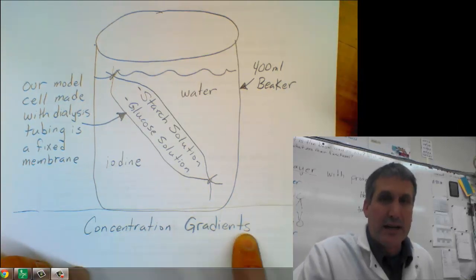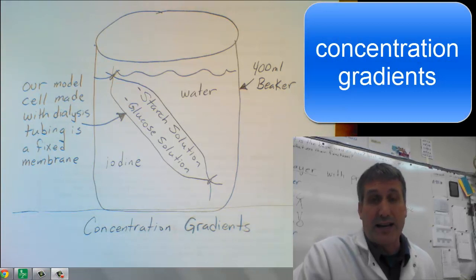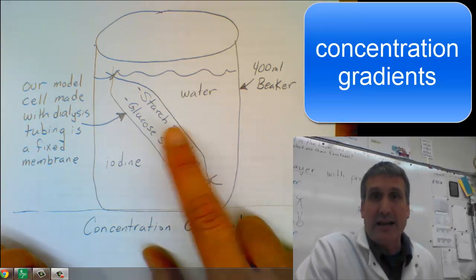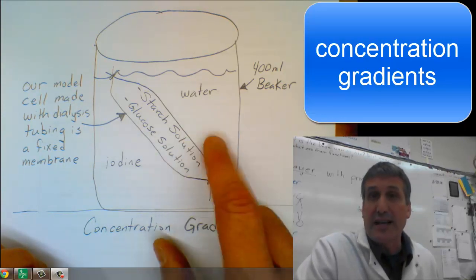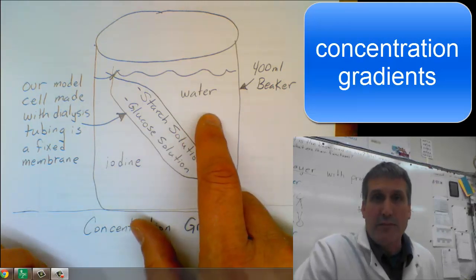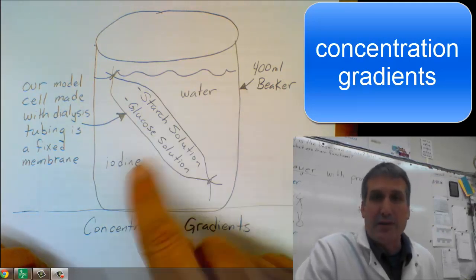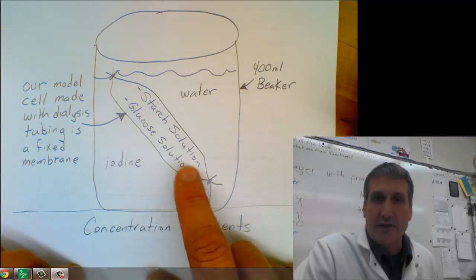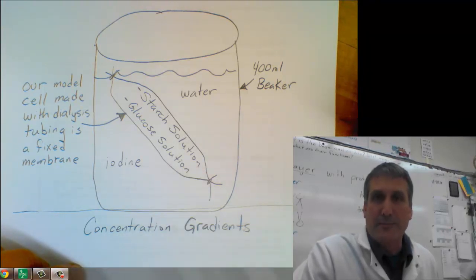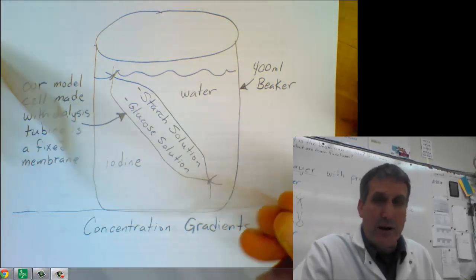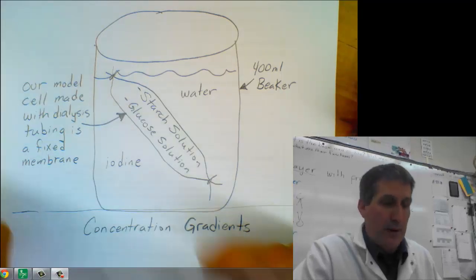So what we're basically doing is creating a bunch of concentration gradients. There's a concentration gradient of starch between the inside and outside. There's a concentration gradient of glucose between the inside and outside. There's a concentration gradient of iodine and even of water. So we're going to see what happens to these molecules, see if they diffuse from high to low concentration across this artificial fixed dialysis tube membrane. So now we're going to move into the back, and we're going to talk about how you're going to actually open up this dialysis tubing and prepare your setup.